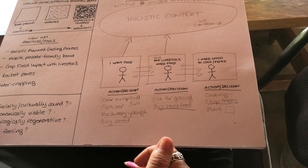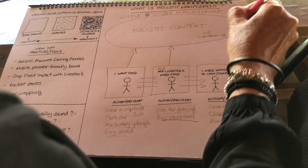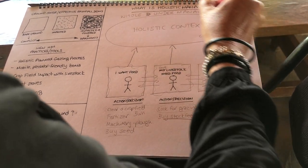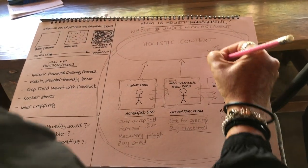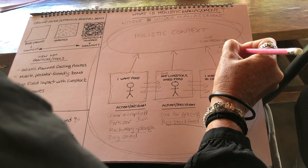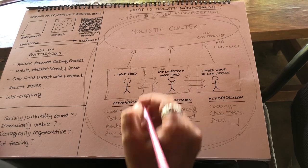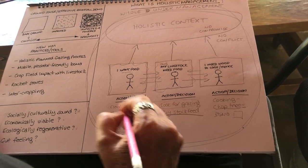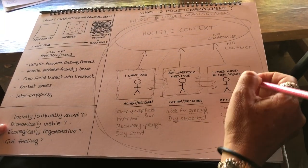You can see how holistic management takes these boxes away. You're not thinking in separate boxes anymore — everyone is together. No conflict. Everyone is operating within their shared context because they've all been involved in creating it. They're still making these daily decisions but finding better practices — regenerative, socially sound, economically viable, and ecologically regenerative.